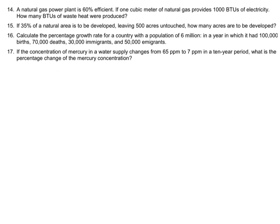Another concept you'll have to be comfortable with is working with percentages. Let's start with question 14. A natural gas power plant is 60% efficient — which would actually be pretty good; we'll talk about efficiency a lot in our energy unit and with ecology. If one cubic meter of natural gas provides 1,000 BTUs of electricity, how many BTUs of waste heat were produced? We don't need to worry about the cubic meter of natural gas. 60% efficient means 0.6, so 0.6 of the total BTUs produced equals 1,000 BTUs.